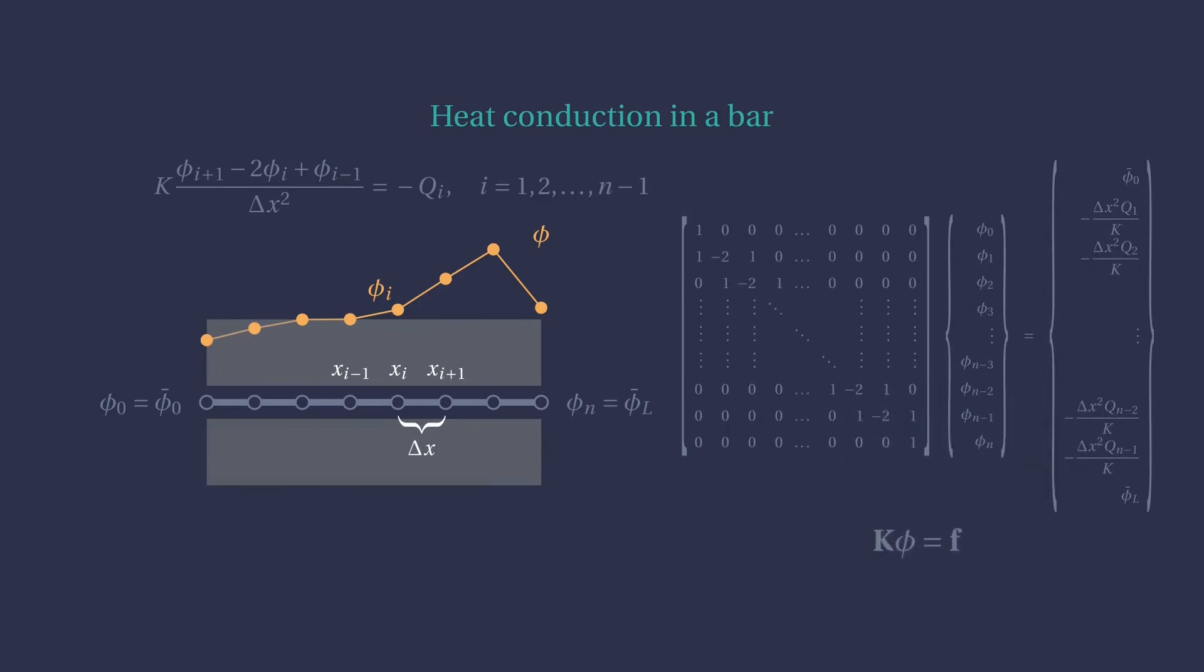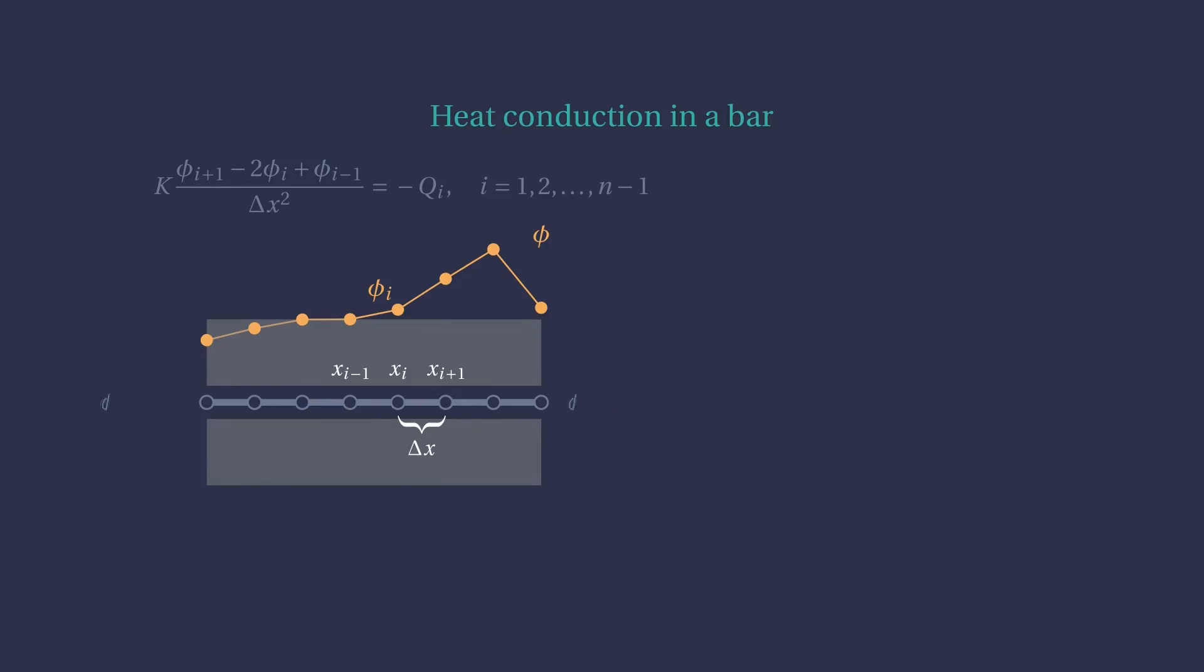What if instead of prescribing a temperature at the boundary, we have prescribed a heat flux? From Fourier's law, we have that the heat flux is proportional to the gradient of the temperature. Of course, we would lose an equation enforcing the temperature at the boundary, and we would have to find a new one. We can use the backward difference to approximate the gradient at the boundary points, yielding the boundary equation we were looking for, and producing again a system of n equations with n unknowns.